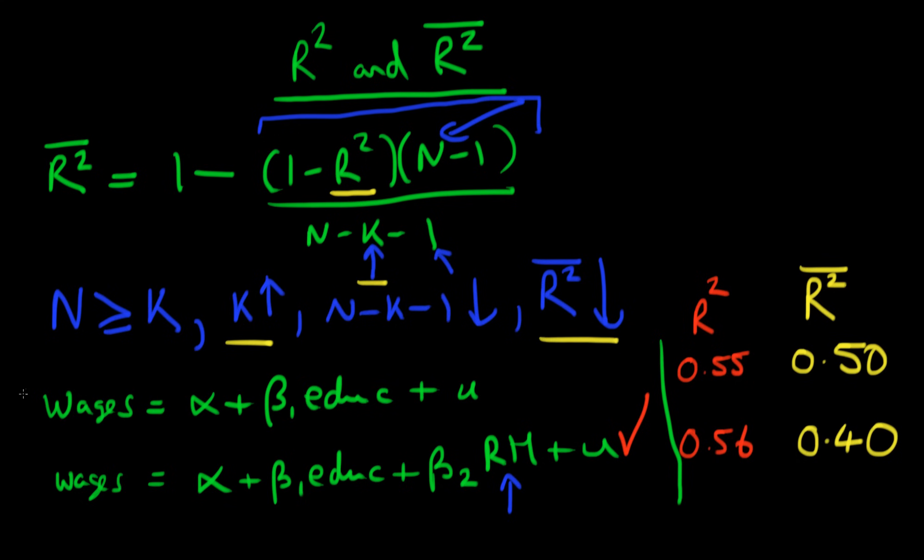On the basis of R-bar squared, we will actually choose the first model rather than the second model. I hope you can see that R-bar squared, although it's not perfect, is a step in the right direction for selecting between different models. It's certainly better than R-squared.